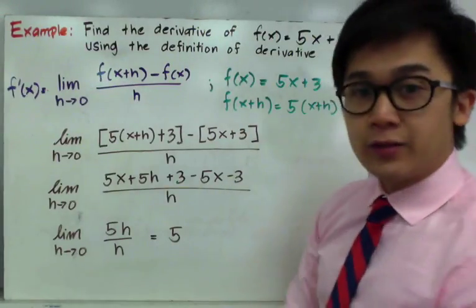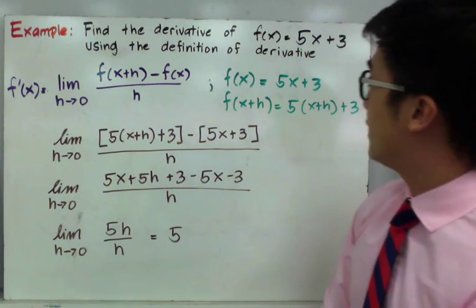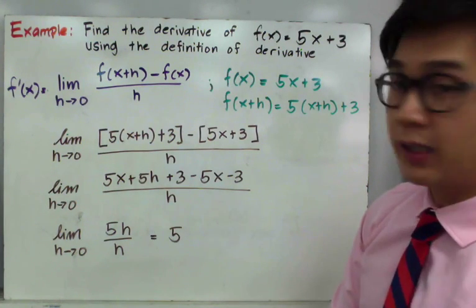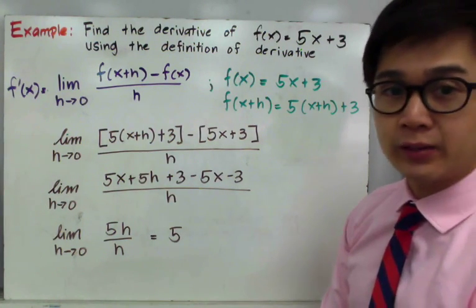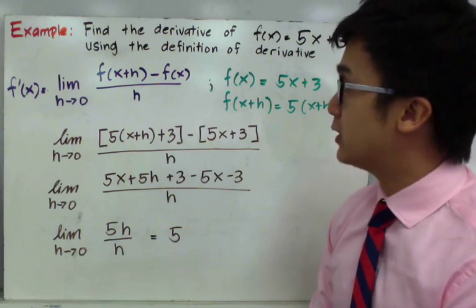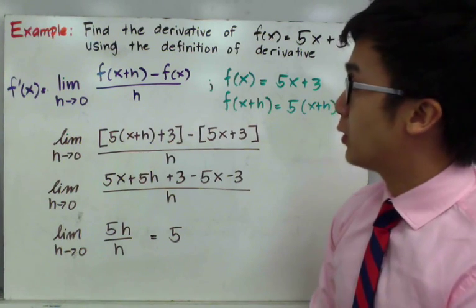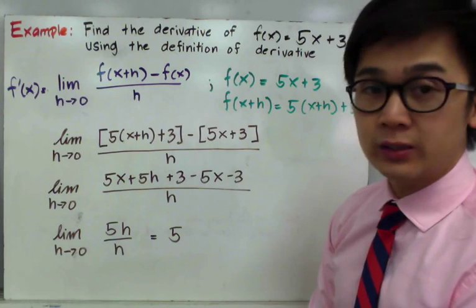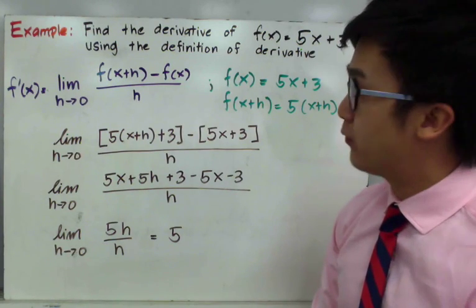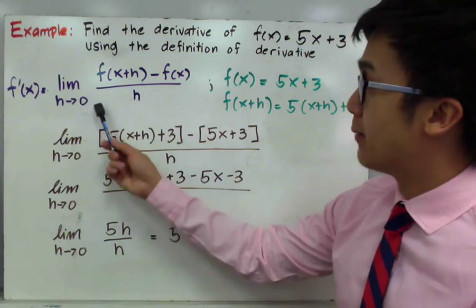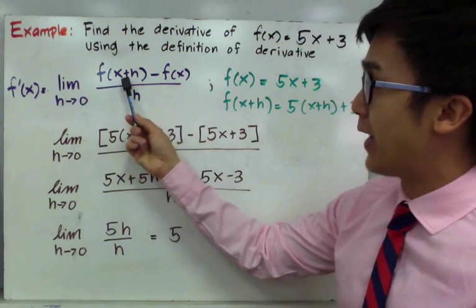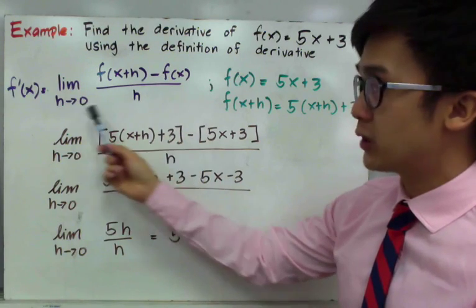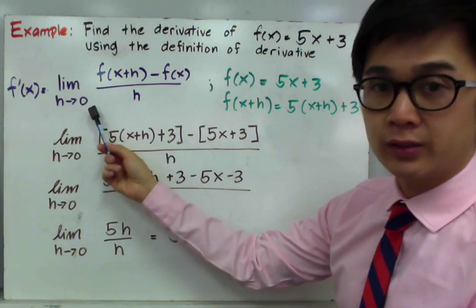For this example, we need to find the derivative of f of x, which is equal to 5x plus 3, using the definition of the derivative. We'll find f prime of x, given by the formula: limit of f of x plus h minus f of x, all over h, as h approaches 0.